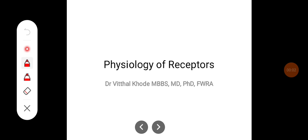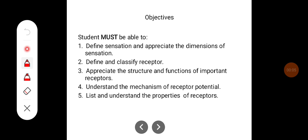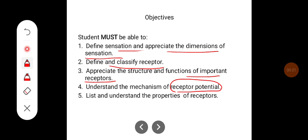Hello everyone. In this class we will study about the receptors. The objectives of this class would be to define sensation and appreciate the dimensions of sensation, define and classify receptors, appreciate the structure and functions of important receptors, understand the mechanism of receptor potential, and list and understand the properties of receptors.